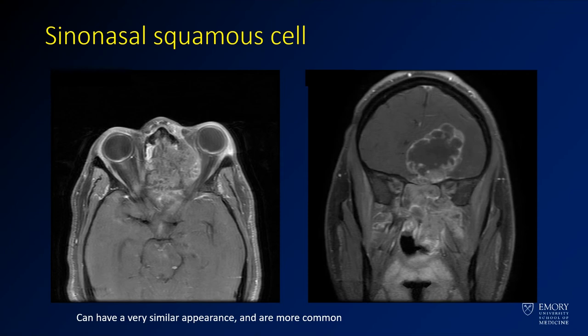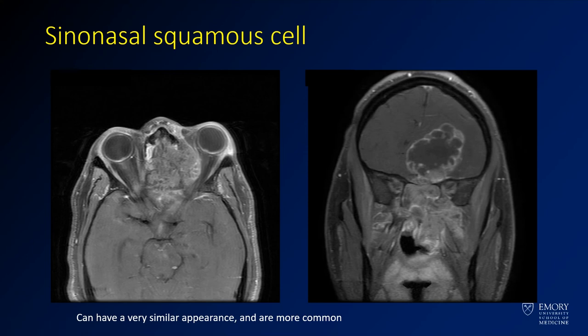This is an example of a sinonasal squamous cell carcinoma. The appearance is quite similar — you have a mass, but this one looks more aggressive, involving both sides of the nasal passages and the medial aspect of the left orbit. It involves the premaxillary space going into the orbit, with a very extensive intracranial component including intracranial cystic or necrotic portions. You should definitely want to rule out a sinonasal squamous cell carcinoma before definitively calling it an esthesioneuroblastoma. Luckily, these are quite easy to sample, as there is very accessible tissue available in the nose.